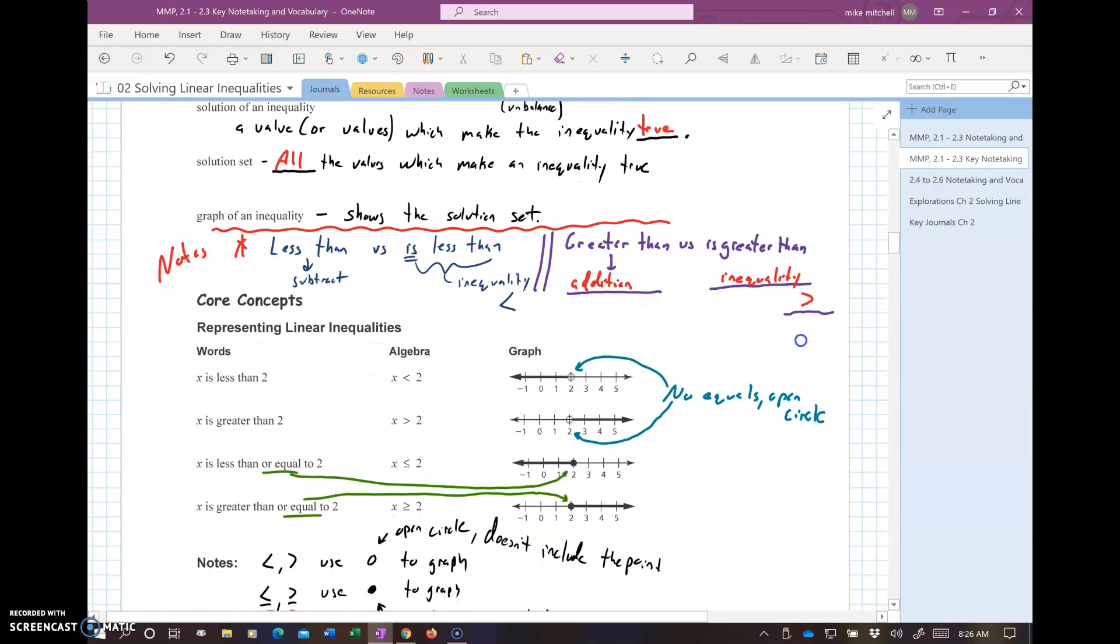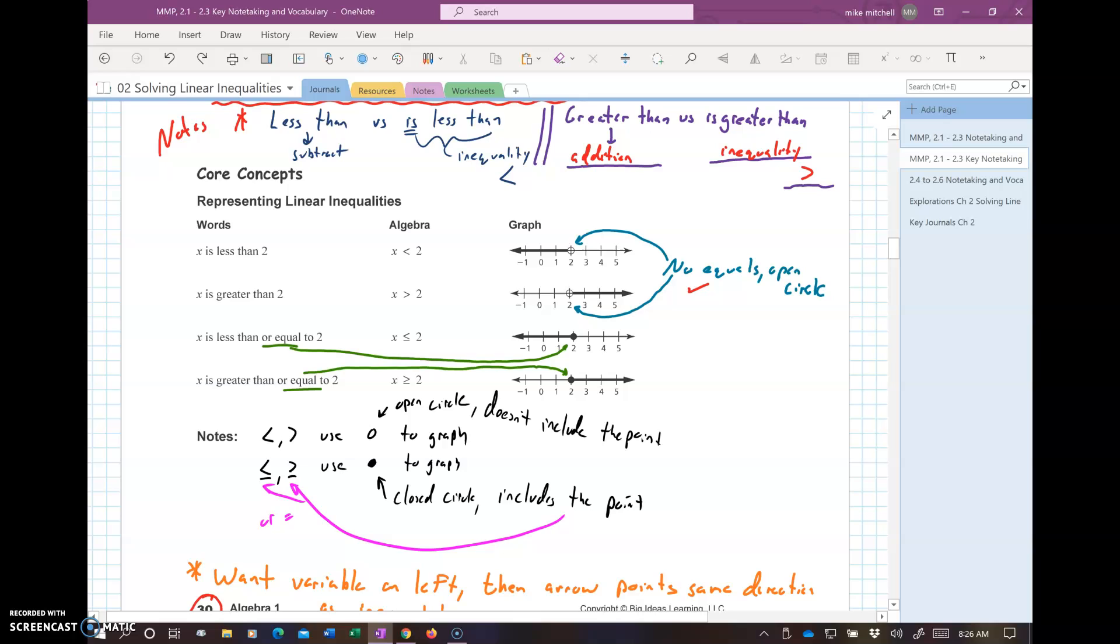Words representing linear inequalities. First thing I want you to notice. Is less than, x less than 2. On the graphs, that's this part right here. That is an open circle. If we have the or equals, you can see the less than or equals has the inequality with the little line left to it versus just the less than. Less than or equal, greater than or equal, we graph with a solid circle to show that it includes the point. Less than, greater than use the open circle. Less than or equal, greater than or equal use the solid circle to graph. Closed circle includes the point. Open circle doesn't include the point.